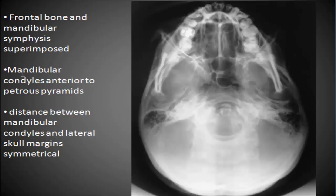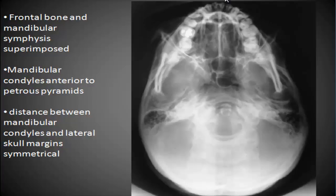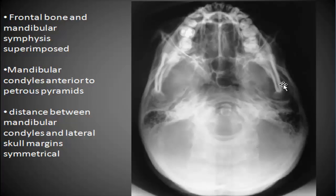Let's take a look at some critique. The frontal bone and mandibular symphysis condyles should be superimposed. When you line up your patient for this view, you should really see the shadow of the frontal bone with the nose projecting anteriorly to that frontal bone as much as possible — that's a good indication you're in a good position. Mandibular condyles should be anterior to the petrous pyramids, and the distance between the mandibular condyles and the lateral margins of the skull should be symmetrical.